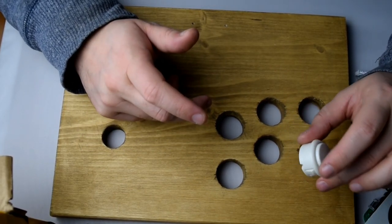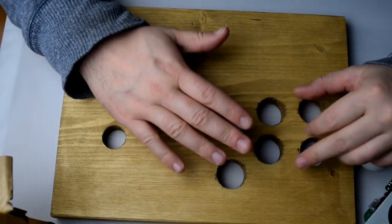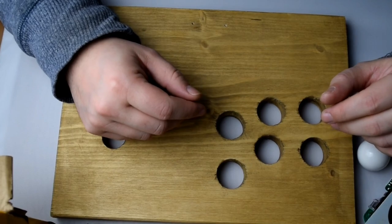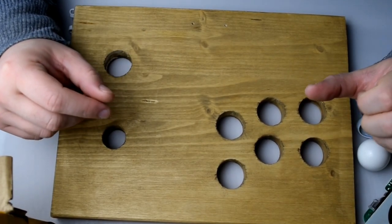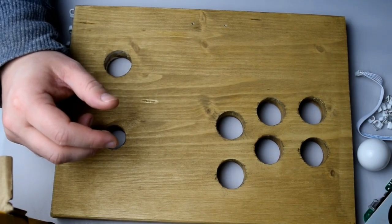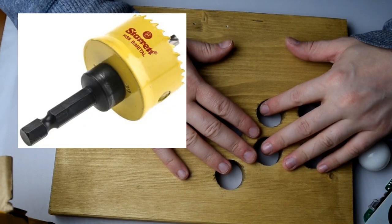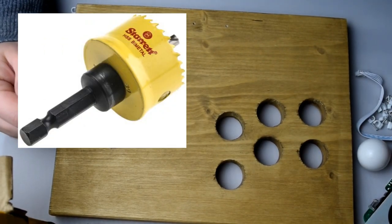You can get hole saws that measure 30 mil—those are the sort of things you need for cutting these sort of holes in wood and plastic. There's a few different types of tools. I do like the hole saws.